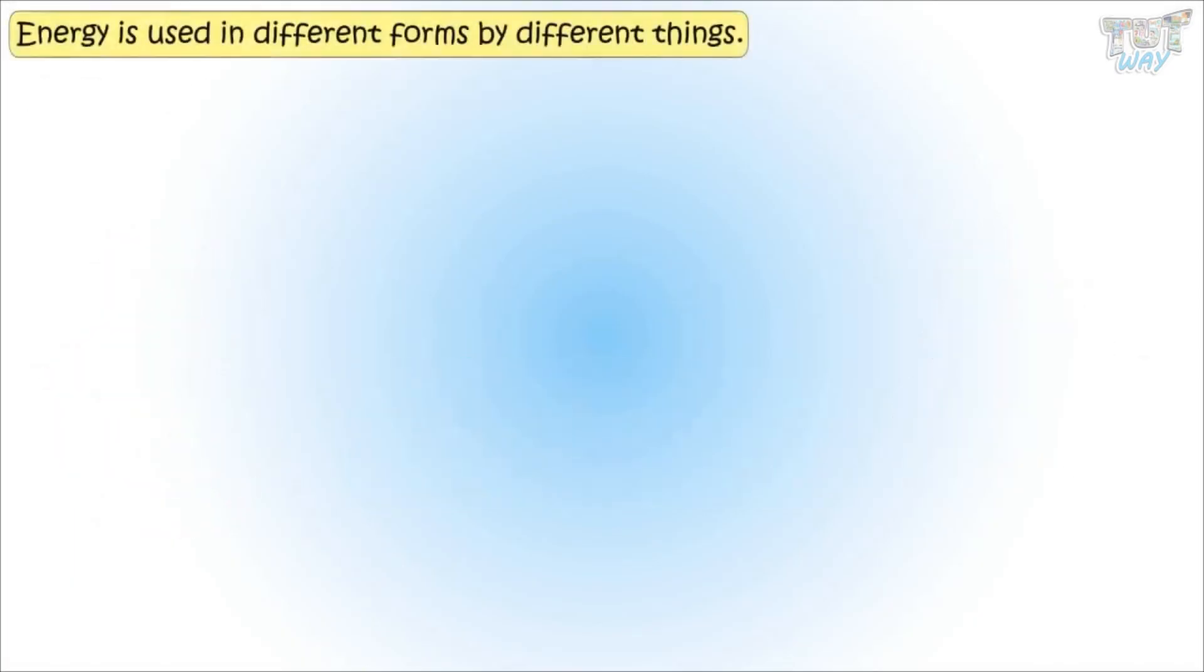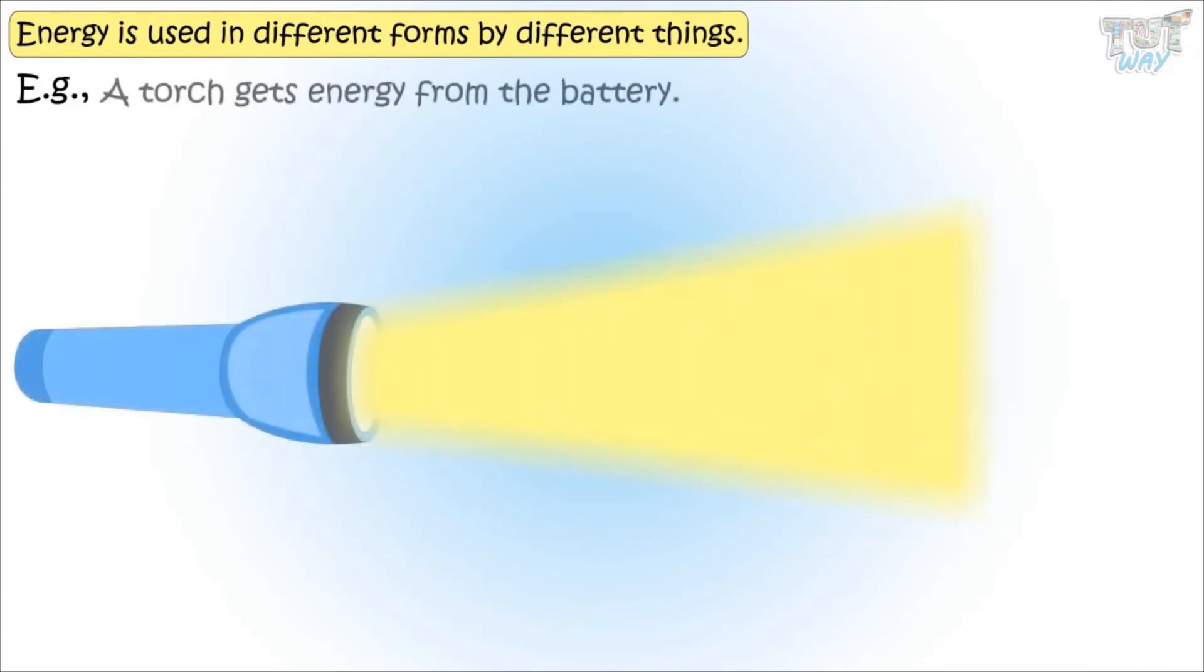Energy is used in different ways, and in different forms, by different things. Let's see some examples. A torch gets energy from the battery.